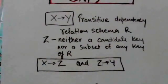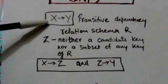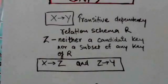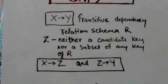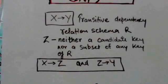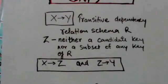A functional dependency from X to Y in a relation schema R is a transitive dependency if there exists a set of attributes Z in R that is neither a candidate key nor a subset of any key of R, and both the functional dependency from X to Z and the functional dependency from Z to Y hold.